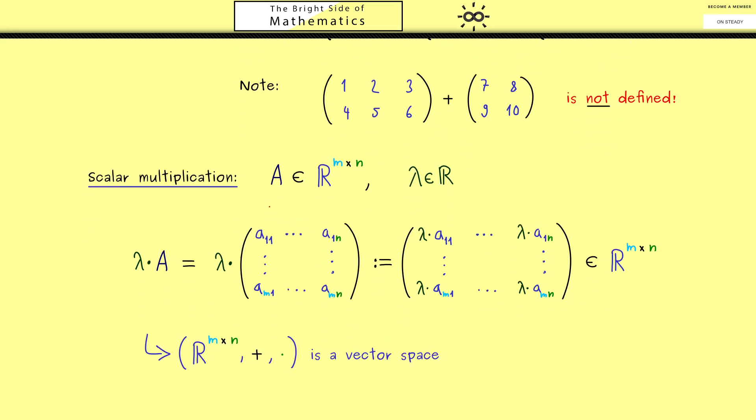It's helpful because, as you can see, the result is exactly the same. The space of matrices with the addition and the scalar multiplication is a so-called vector space.